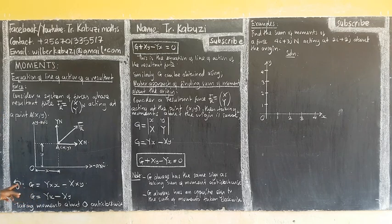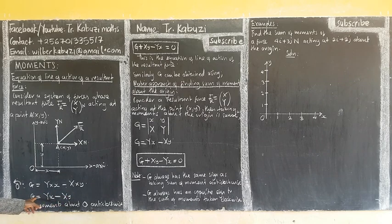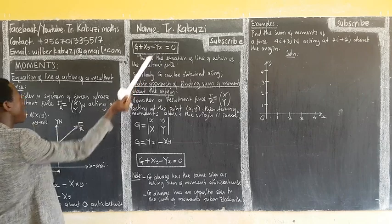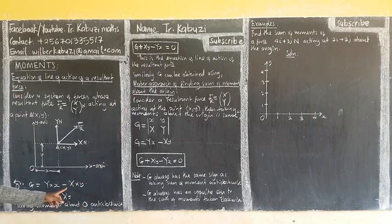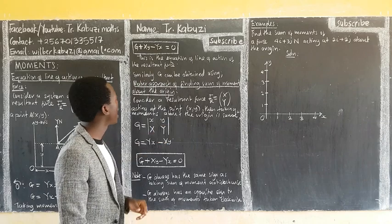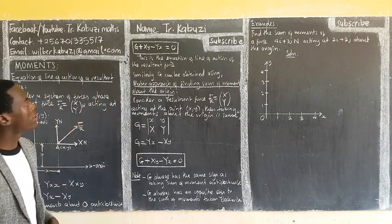If there is a change in direction, we attach a negative sign. So simplifying, you get this term, and simplifying the other gives that term. Taking one side gives a negative, and the other gives a positive. This is the equation of the line of action of the resultant force.